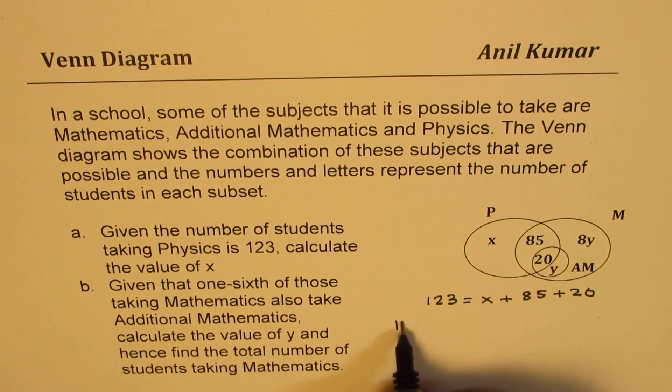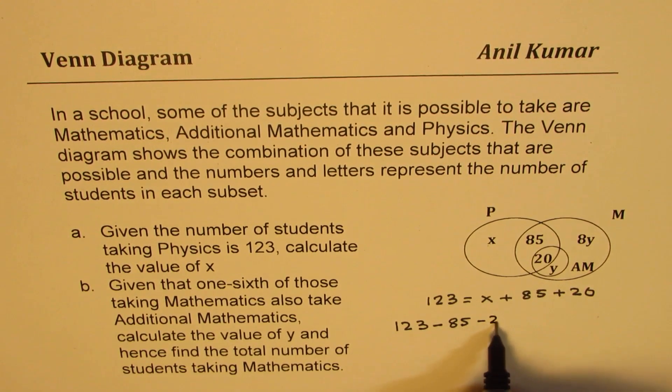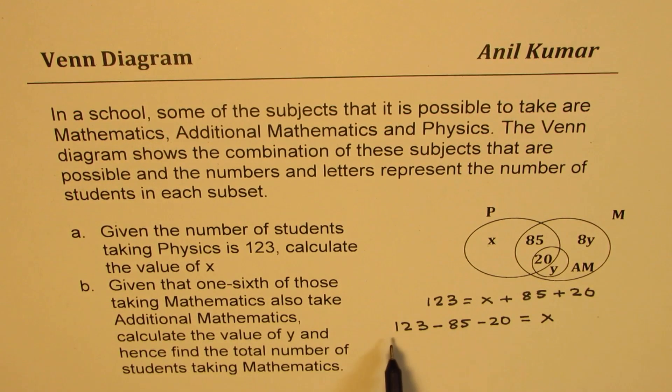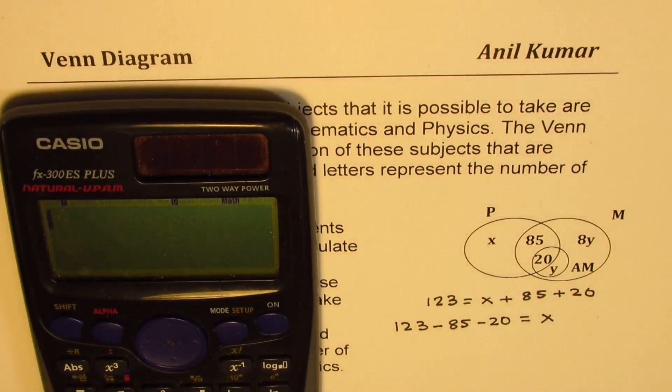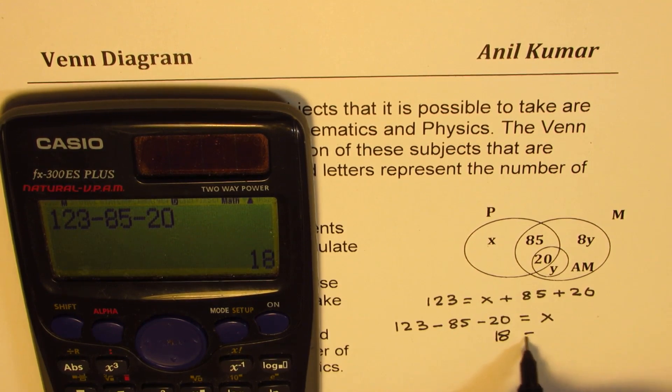So X could be found as 123 minus 85 minus 20. That is the value of X. Correct? So when you take this, what do you get? You can use the calculator or just do it without that as the case may be. So you can take away 85 and 20 and that gives you the value of X as 18.